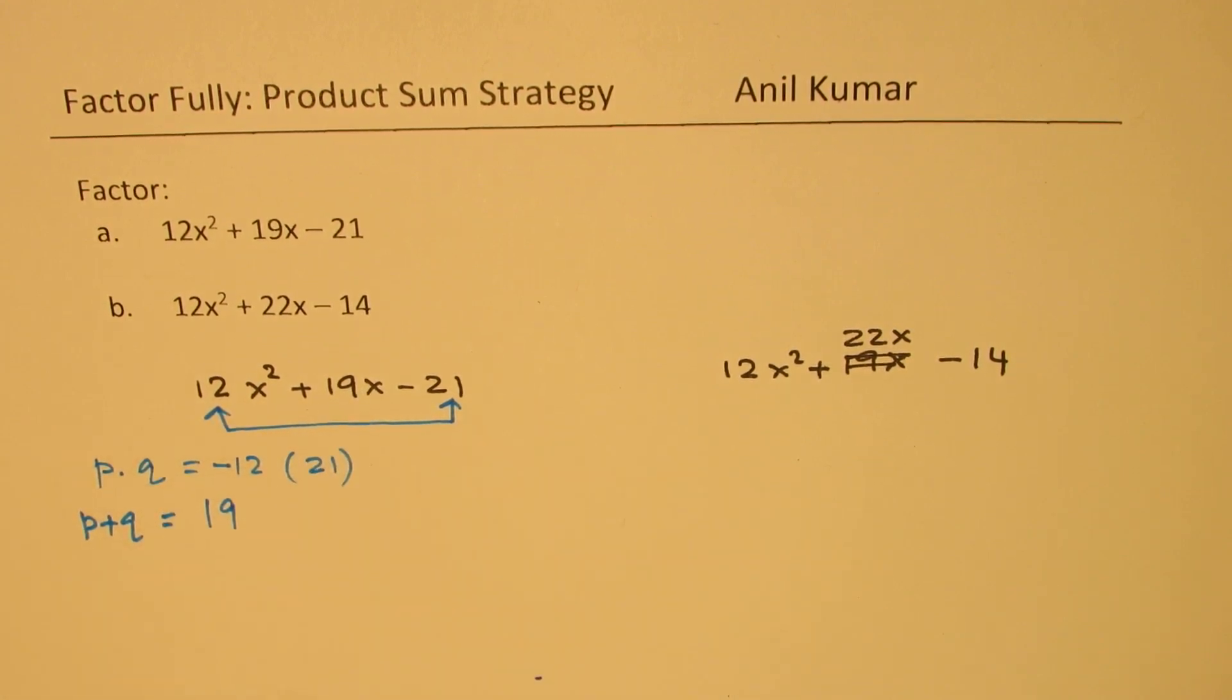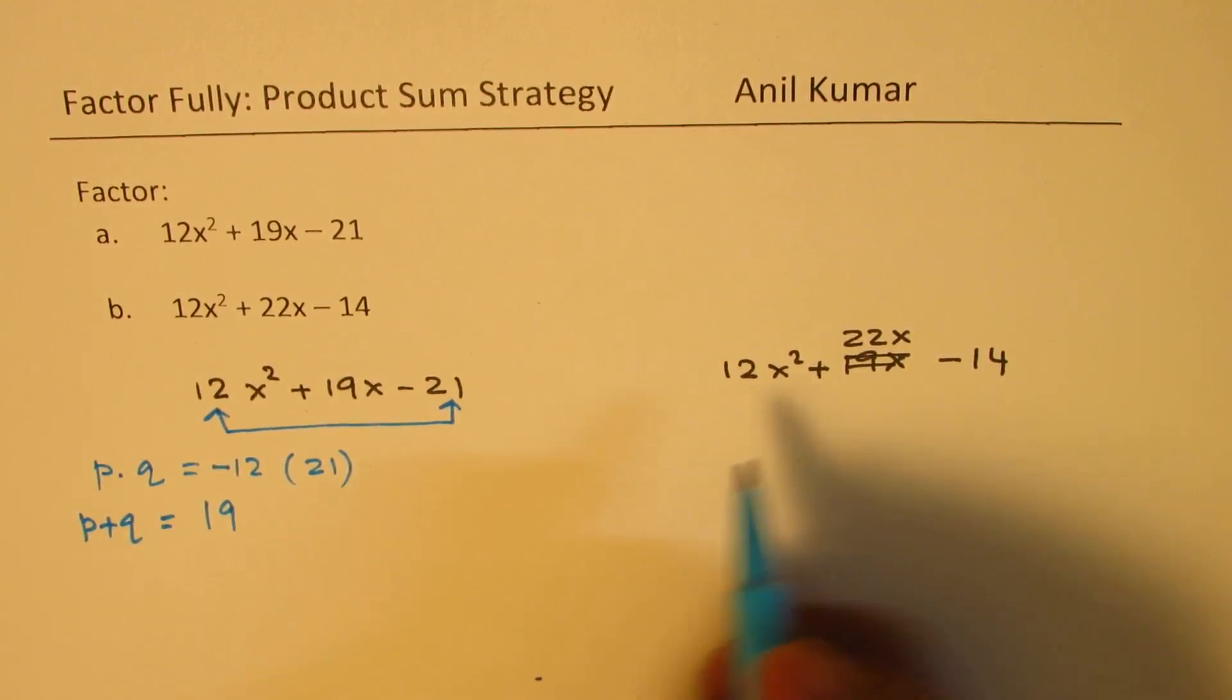And we are also looking for sum of P and Q should be 19, positive 19. That's the whole idea. So how do we get that combination? That is a big question.